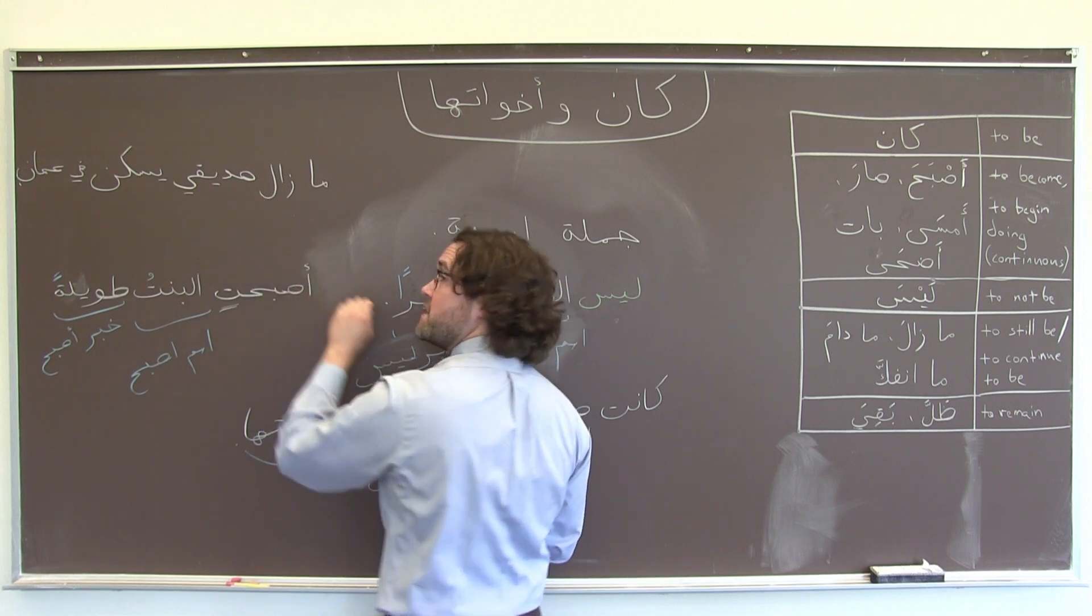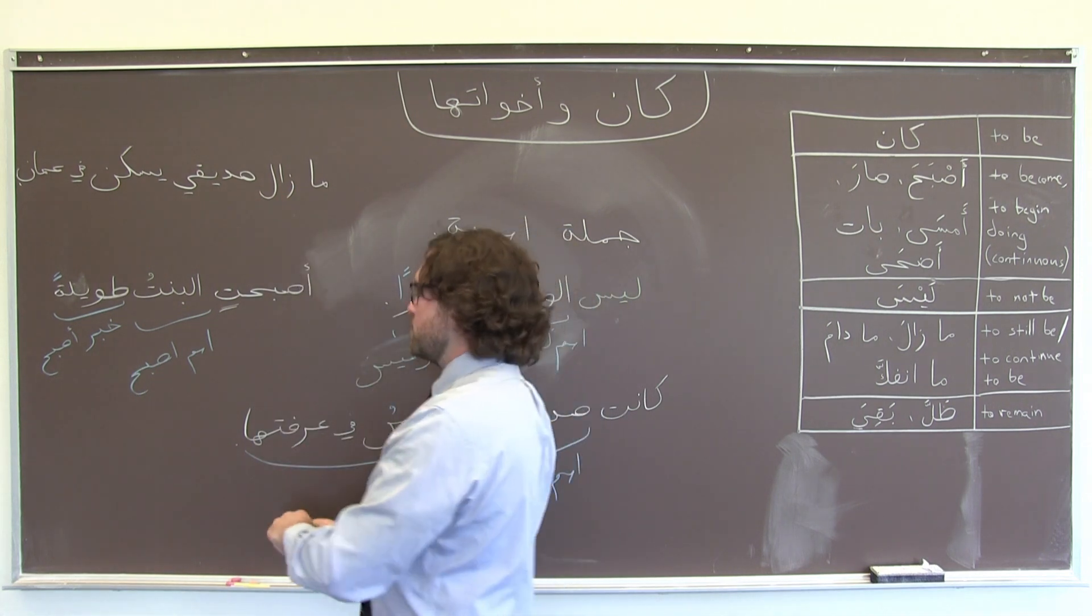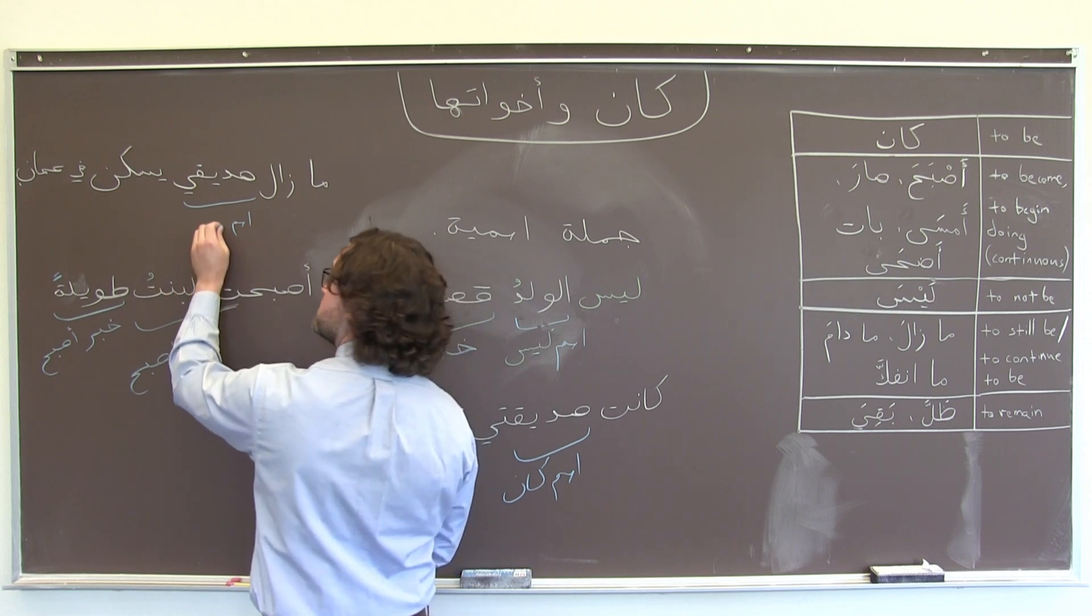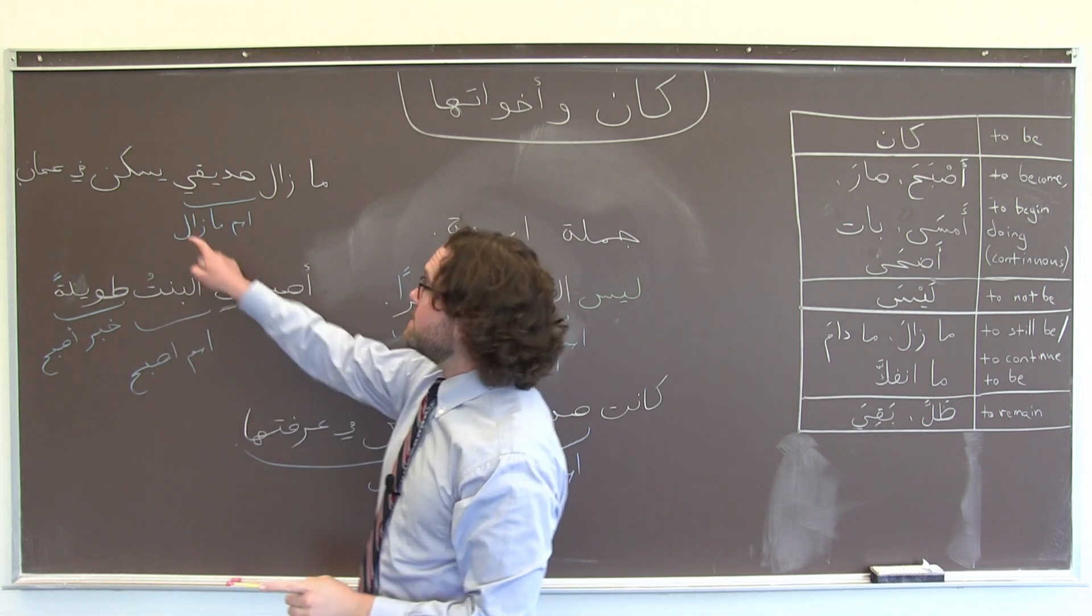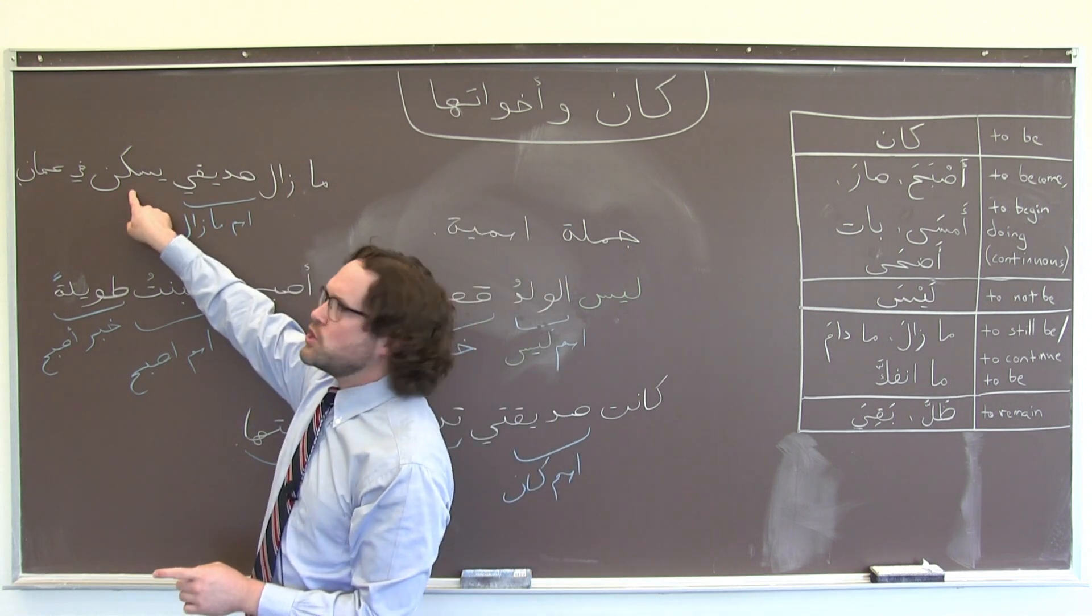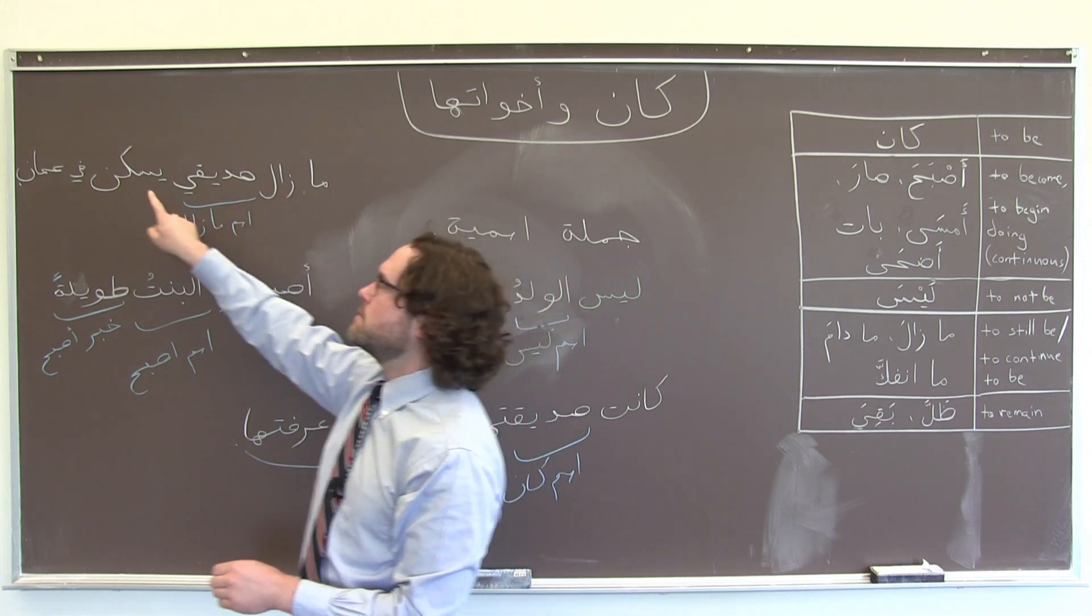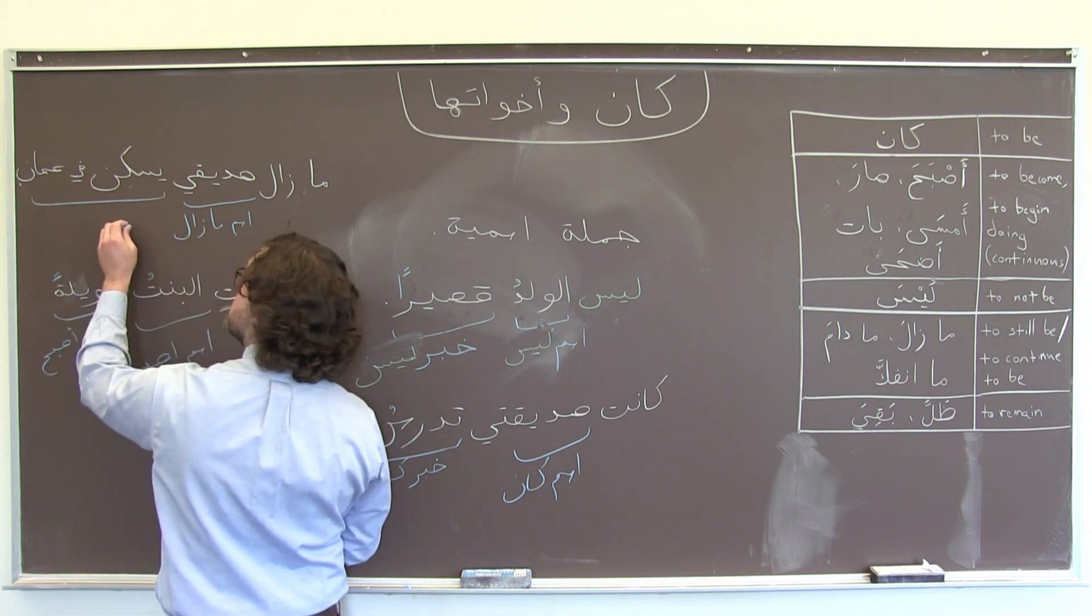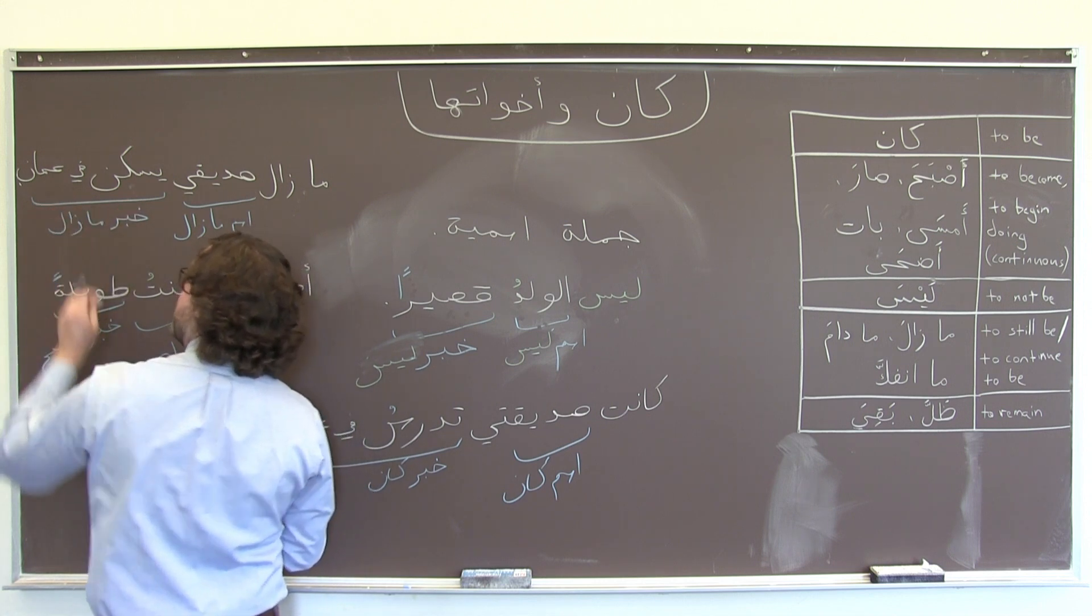So here we have ما زال, our verb that's sort of situating things in time. The friend is still. صديقي would be اسم ما زال. And then here again, we have a جملة فعلية, a sentence that begins with a verb. So this ما زال is kind of situating this verb more specifically in time. My friend is still living in Amman. And then that جملة فعلية, that verbal sentence, would be the خبر of ما زال.